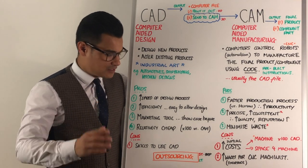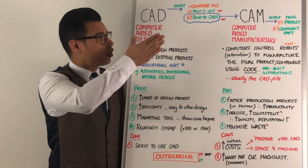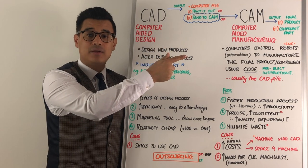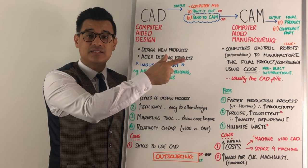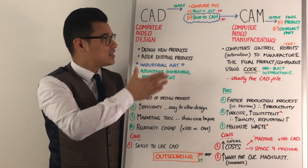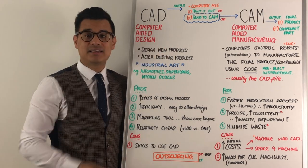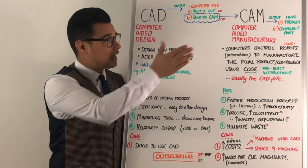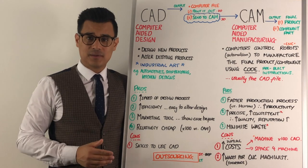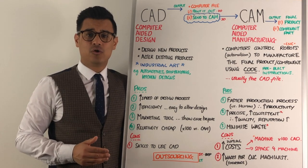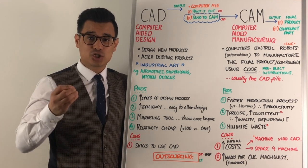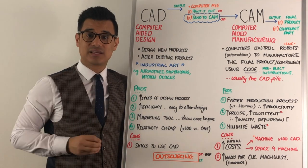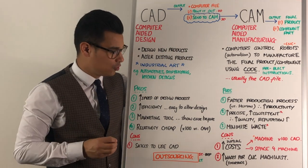Because CAD is relatively cheap and CAM is relatively expensive, it's very normal for businesses to have CAD in-house but outsource the CAM to another business to produce it for them. This means that in the short term they don't need to pay for the machine — they outsource it and get someone else to do it.